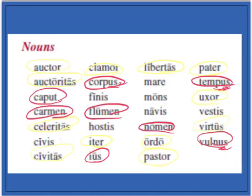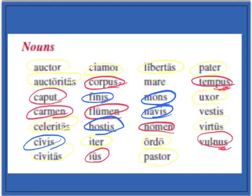Now, our I-stems. For masculine-feminine, we have: civis, navis, hostis, mons, nox, vestis. Notice how they all end in IS — you can start seeing that pattern for an I-stem. You don't have to memorize the rules, but you just have to know which words are I-stems. Mons, montis is monosyllabic and ends in two consonants. Then lastly, we have mare, which is the only neuter I-stem you'll know.